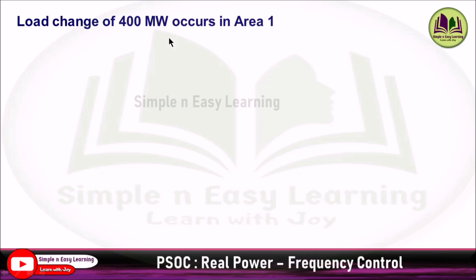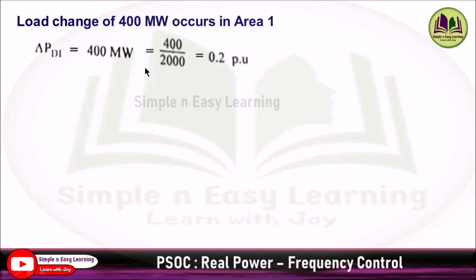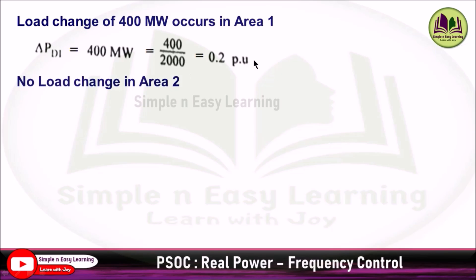The load change of 400 MW occurs in area 1, so ΔPD1 = 400 MW. In per unit: 400/2000 = 0.2 pu. There is no load change in area 2, so ΔPD2 = 0.